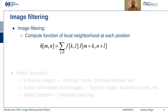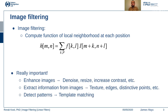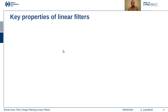Filtering is important because it helps to enhance images — for example, saturation improvement, contrast enhancement, histogram equalization, resizing, and denoising. You can also extract important information from images using filtering, such as edges, textures, and patterns. You can also detect predefined templates that you are looking for.